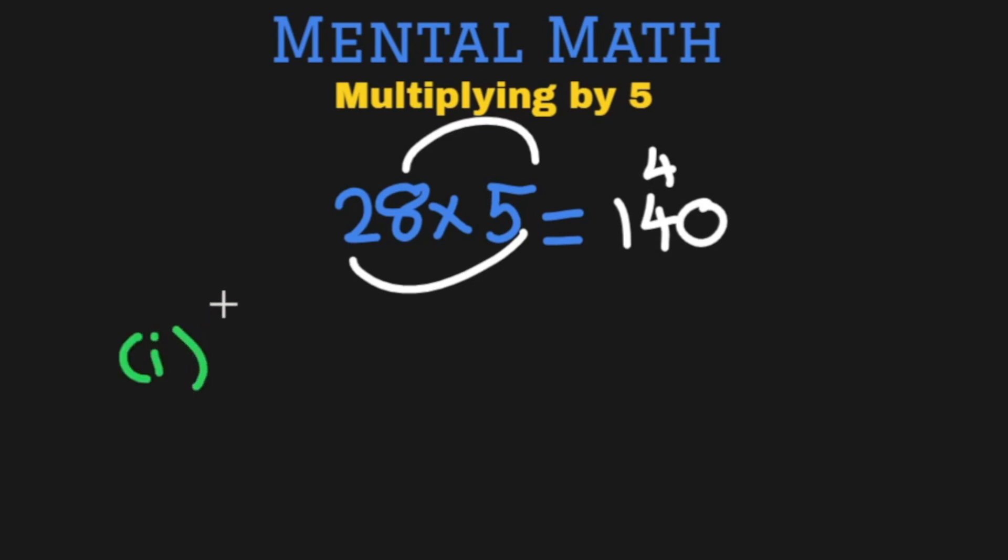So let's do those steps. The first step is that we divide the number that we want to multiply by 5 by 2. 28 divided by 2. Very easy to do division by 2 because you just half the number. So 2 becomes 1 and 8 becomes 4 and we get 14.